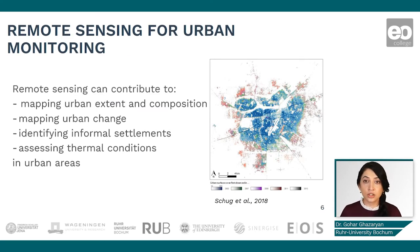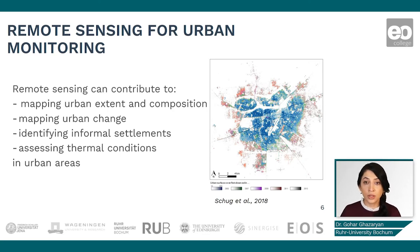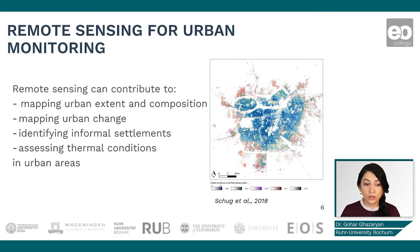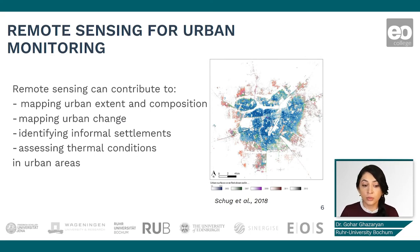Remote sensing plays an essential role in urban monitoring. Often it is the only reliable source of data which provides information over large areas, and provides repeated information which allows us to not only use it for mapping the urban extent and composition, but also map and quantify urban changes, identify informal settlements, and assess phenomena such as urban heat island based on thermal data.